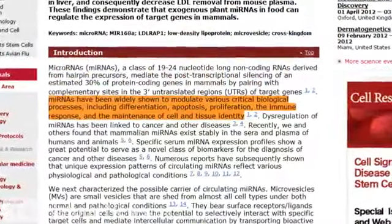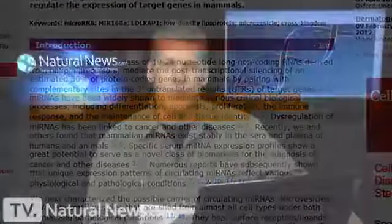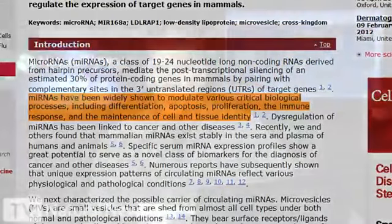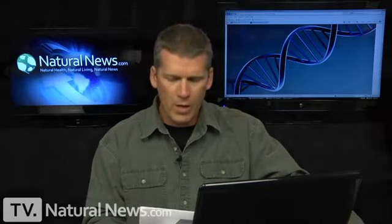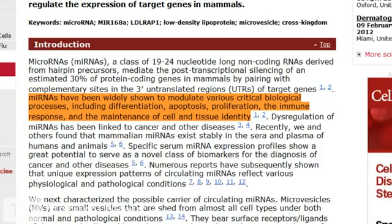MicroRNAs have been widely shown to modulate various critical biological processes, including differentiation, that's cell specialization, apoptosis, which is part of the cancer prevention process in normal human cell metabolism, proliferation, the immune response, and the maintenance of cell and tissue identity.